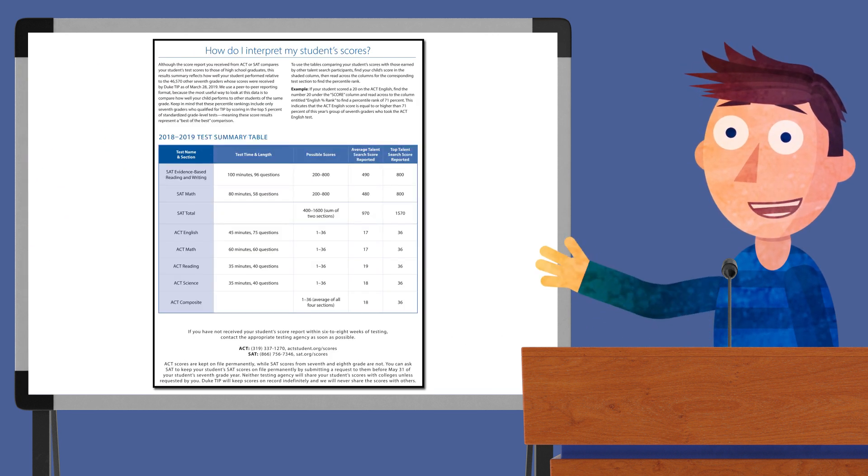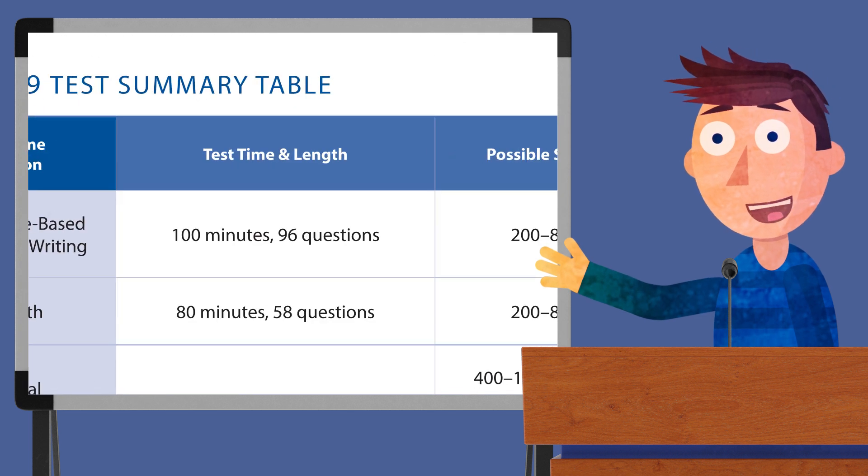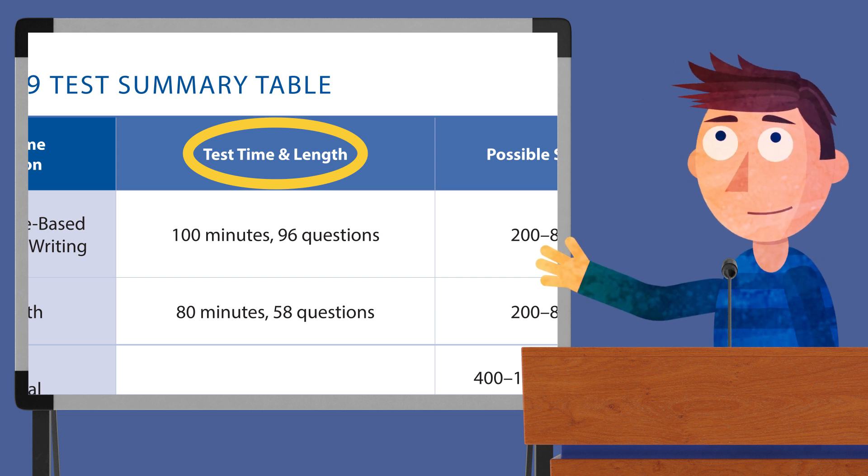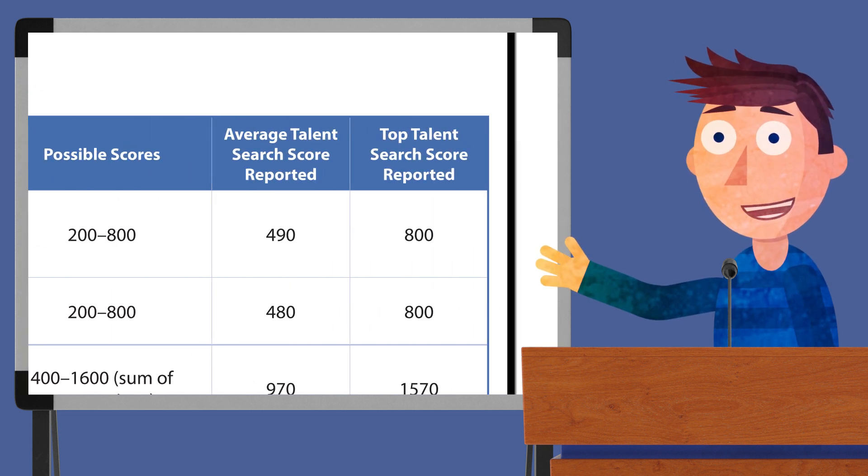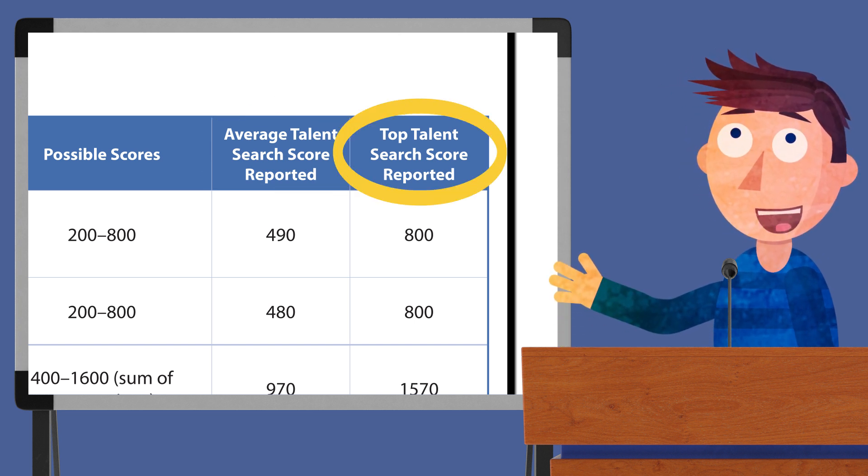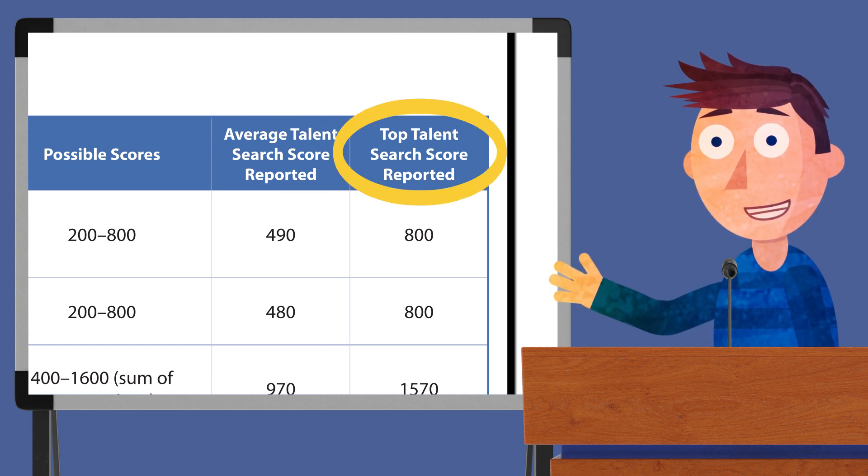As you dive into this report, you'll see that we highlight a couple of different things. One, the breakdown of both the ACT and SAT in terms of test time and length. Two, the average scores of all the 7th grade talent search participants who took the test. And three, the highest scores achieved by all the 7th grade talent search participants who took the test.